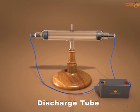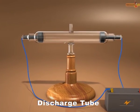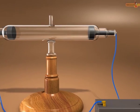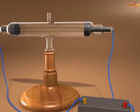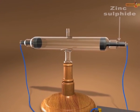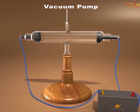A discharge tube is a long glass tube containing two thin pieces of metal called electrodes sealed at its two ends. Cathode is the negatively charged electrode and anode is the positively charged electrode. The discharge tube is connected to a power source. The tube behind the anode is coated with phosphorescent material like zinc sulfide. There is a side tube which can be connected to a vacuum pump so that experiments can be performed at low pressure.